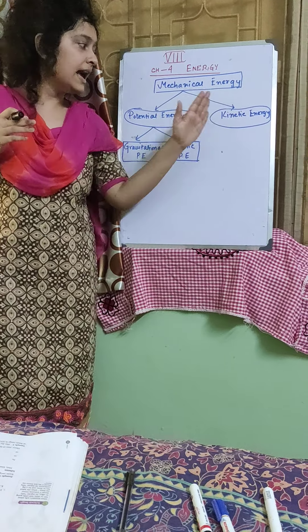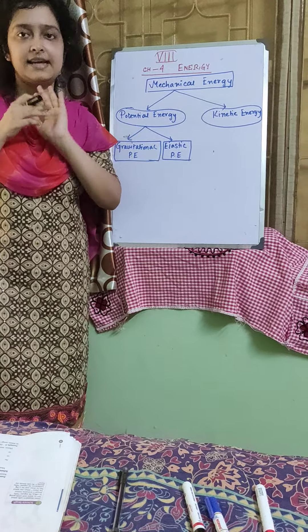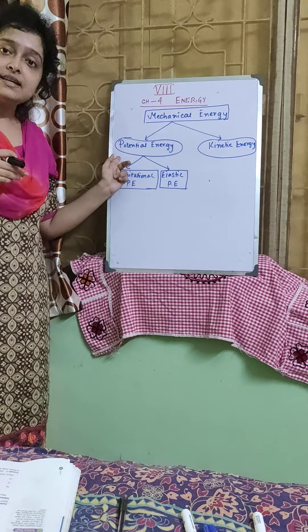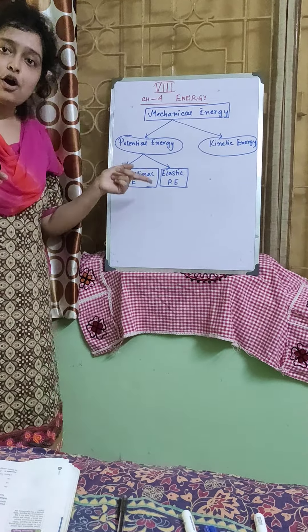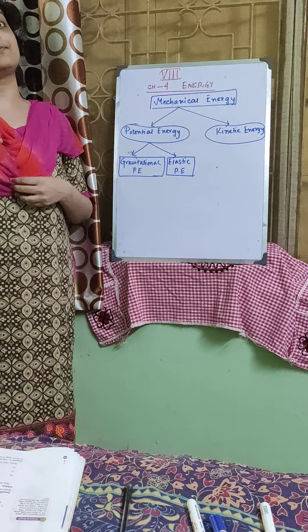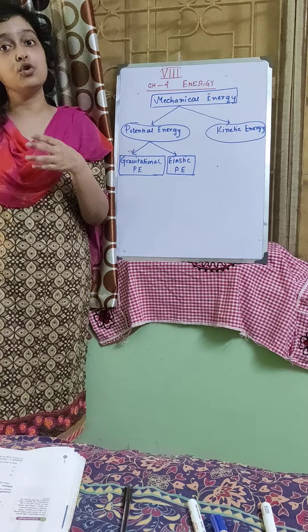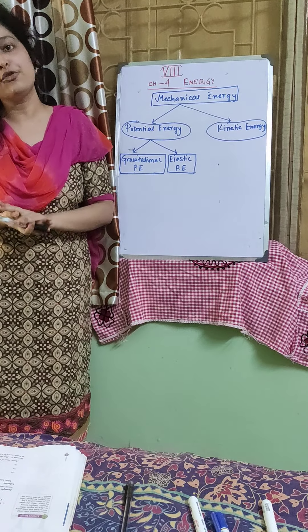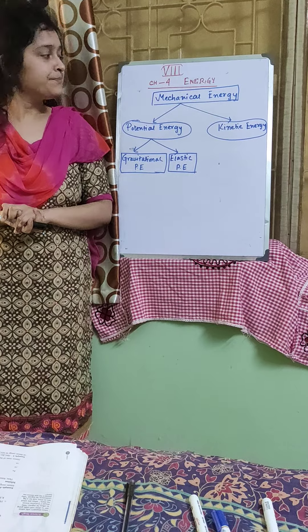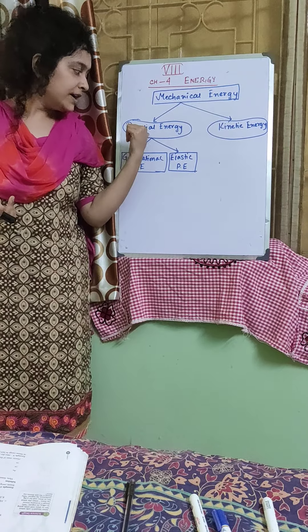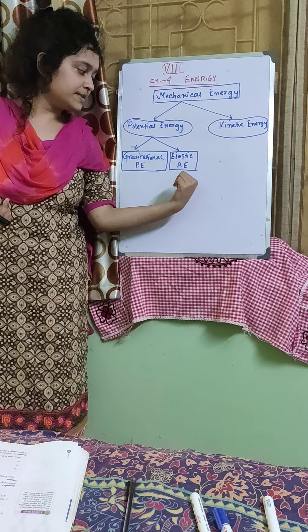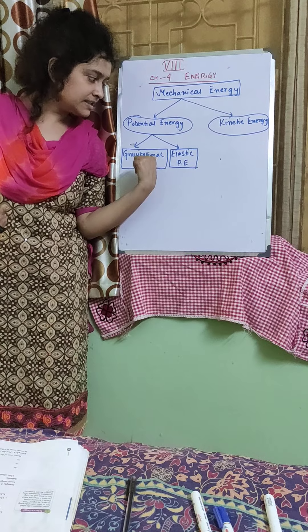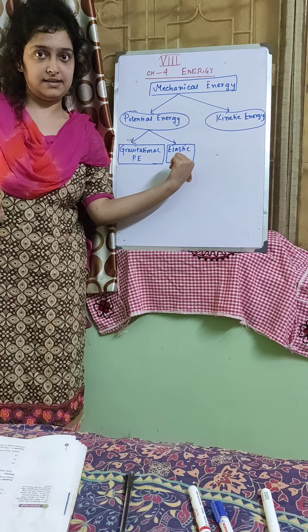It is of two types: potential energy and kinetic energy. Potential energy is that form of mechanical energy which is possessed due to the position or the configuration of a body. It is again of two types: gravitational potential energy and elastic potential energy.